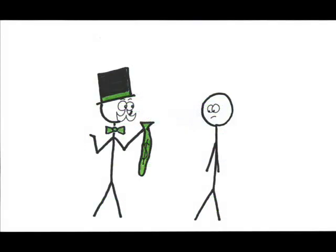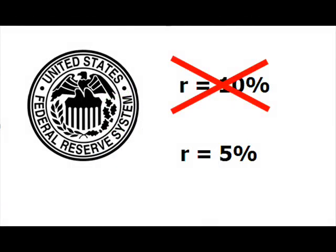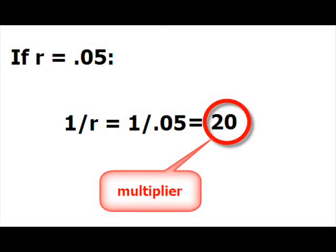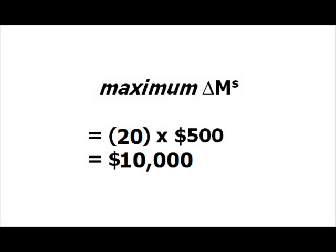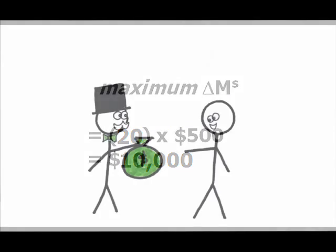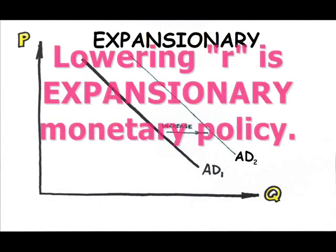What if the Fed decreases the reserve requirement to 5%? Now the multiplier — 1 over R, or 1 over 0.05 — is 20. So a $500 change in reserves can make up to a $10,000 difference in the money supply. Decreasing the required reserve ratio makes more money available for lending, thereby increasing spending in the economy: expansionary monetary policy.